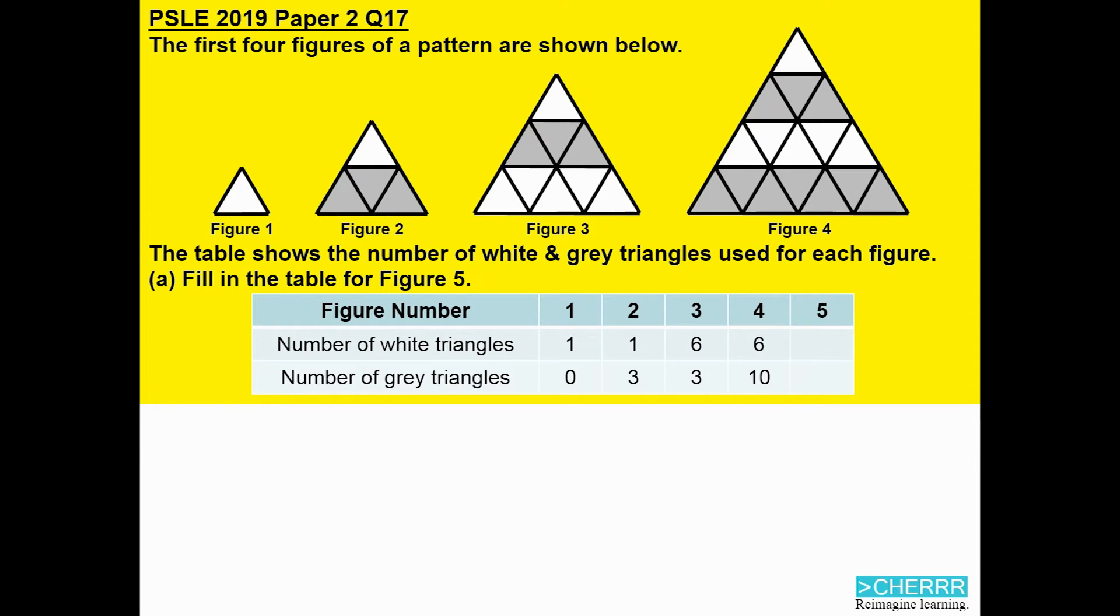Now, we are going to look at the figure itself and we are going to count the white and the grey separately. So, in figure 1, I have 1 and that is purely white. In figure 2, I actually have 1 plus 3, 1 for white, 3 for grey.